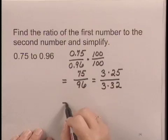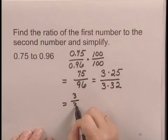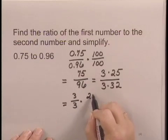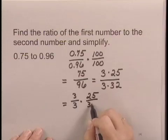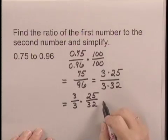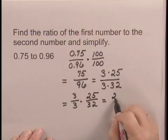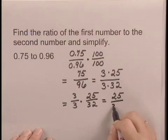And simplifying, we have 3 over 3 times 25 over 32, which is 1 times 25 over 32, or 25 over 32.